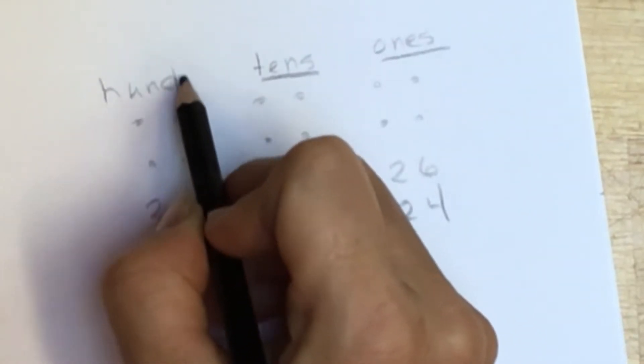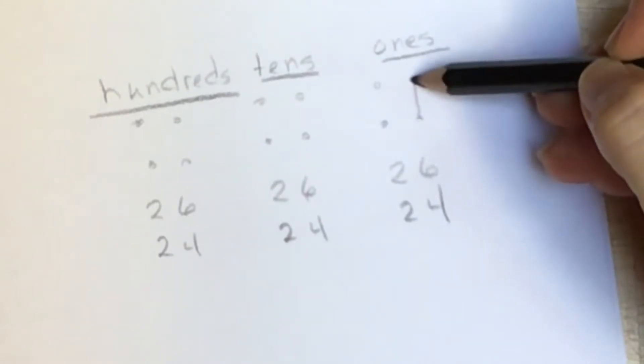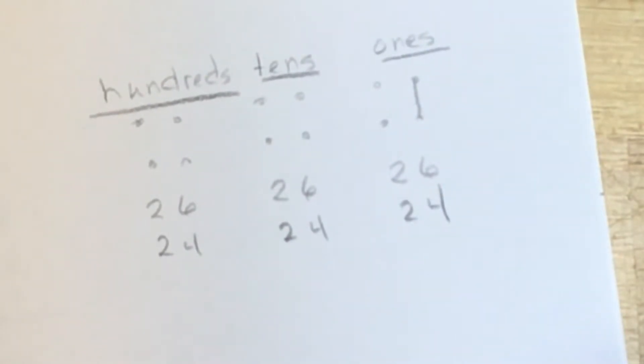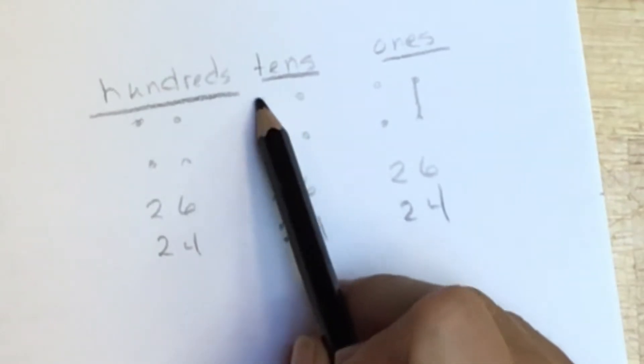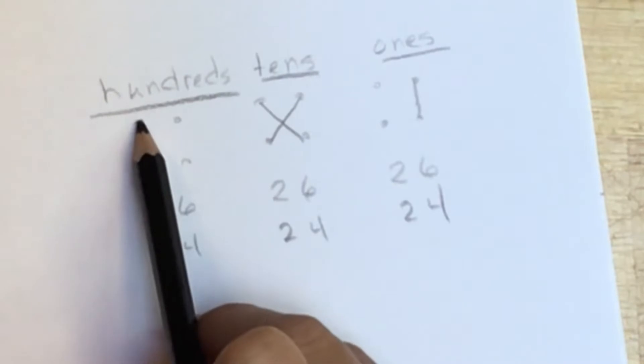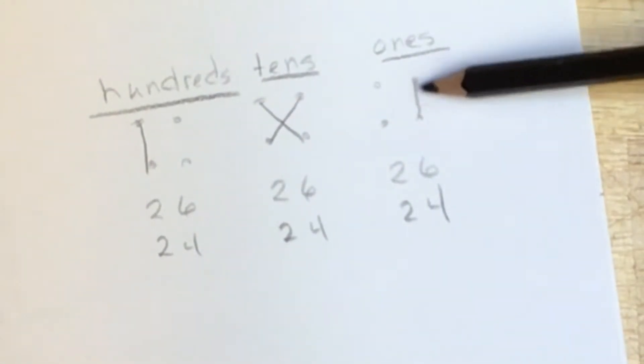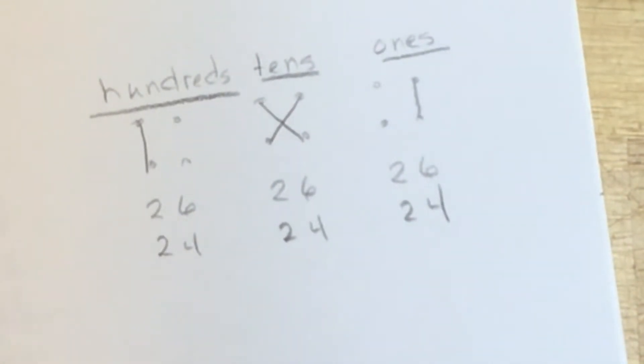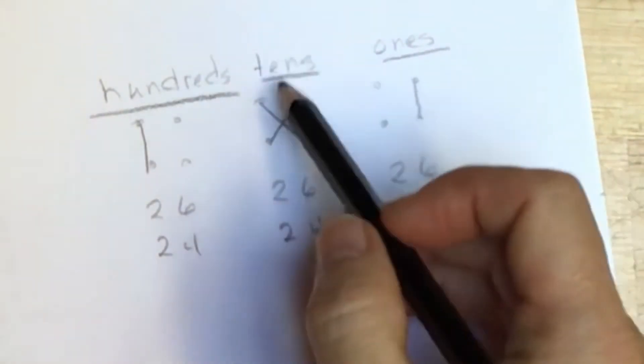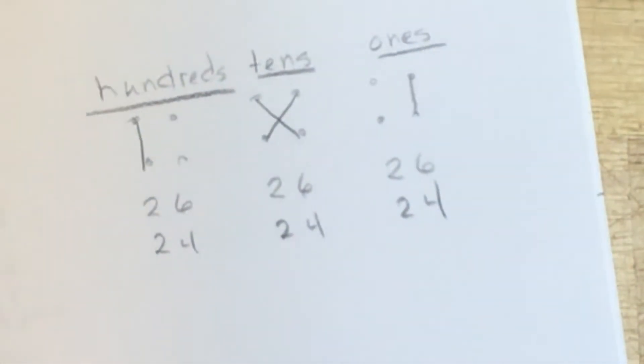To get our ones, we're multiplying the ones by the ones. To get our tens, we're multiplying the tens by the ones. And if you think about this, it makes sense. When you multiply ones by ones, you mostly get ones. Occasionally you get another ten, but that ten will be carried over here. When you multiply tens by ones, you get tens. When you multiply tens by tens, you get hundreds.